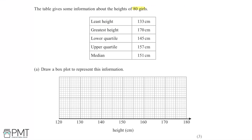Half the girls are taller and half are shorter than 151 centimeters. I'm then asked to draw a box plot to represent this information, with heights along the bottom axis. The box plot has a main box in the center with lines at the lower quartile, the median, and the upper quartile, and then there are also tails or whiskers extending out from the box.